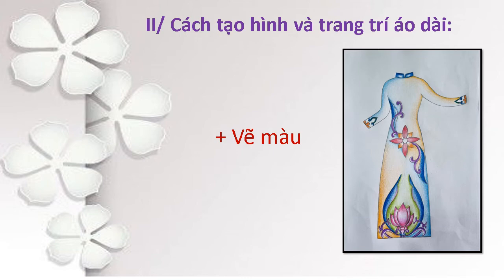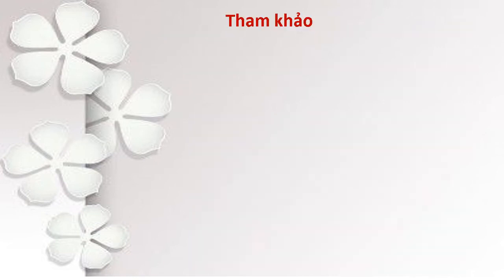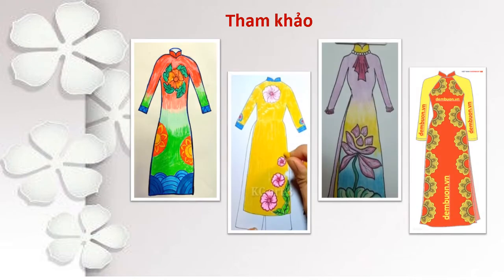Chúng ta có thể phối một màu hoặc là nhiều màu tùy theo ý thích của mình. Phần thực hành trang trí áo dài với họa tiết dân tộc: các em sẽ lựa chọn những họa tiết yêu thích để trang trí theo nhóm trên giấy A3. Phần tham khảo, chúng ta sẽ cùng xem một số bài sưu tầm về cách vẽ áo dài ứng dụng từ họa tiết thời Lý, thời Trần, được sắp xếp với nhiều cách khác nhau và sử dụng màu sắc khác nhau.